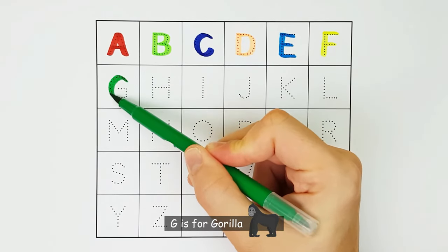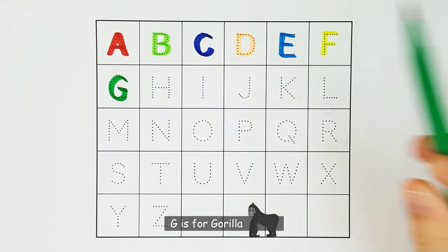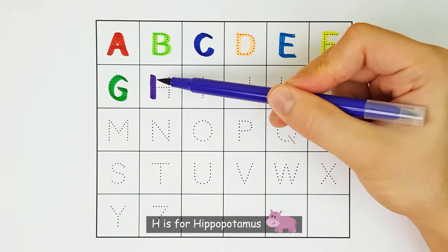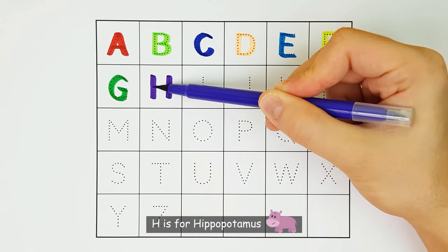G. G is for gorilla. G. H. H is for hippopotamus. H.